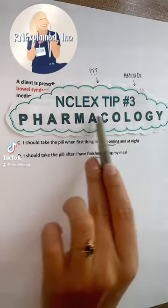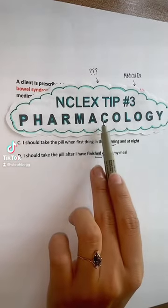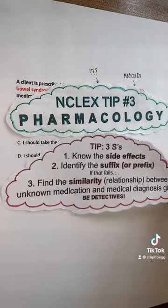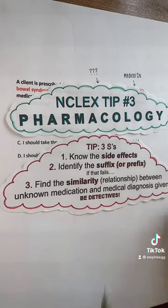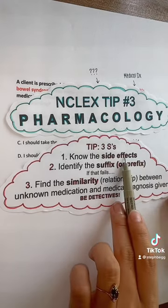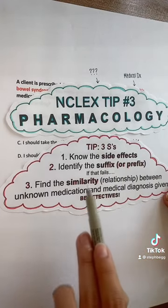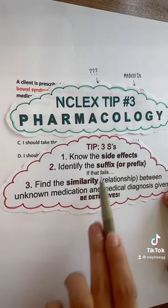Part 3 NCLEX tips. No matter how much you study, you'll always get that insanely random med you've never heard before. My tip: the three S's — know the side effects, identify the suffix, and find the similarity.